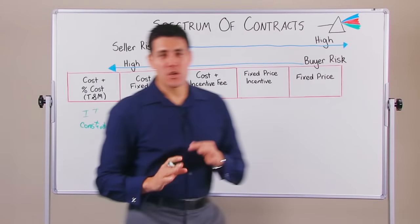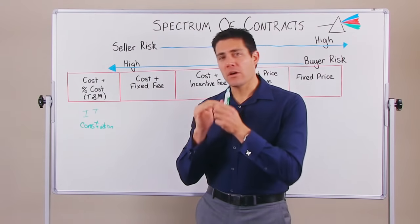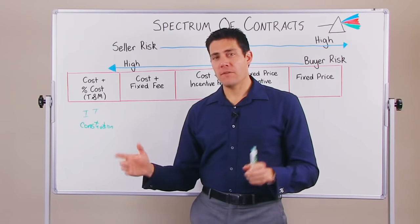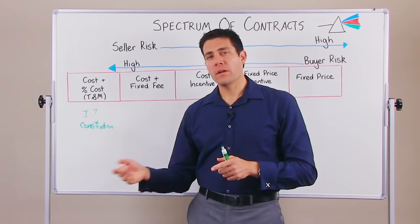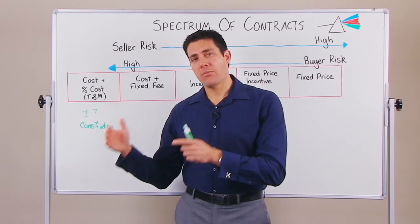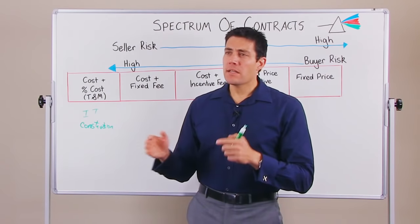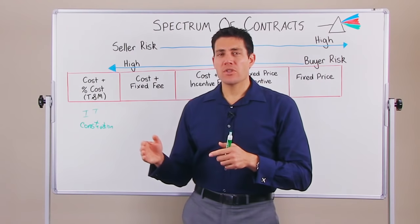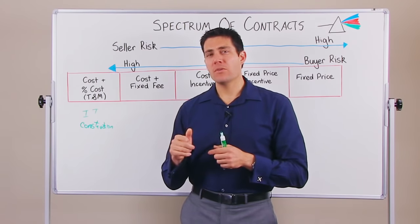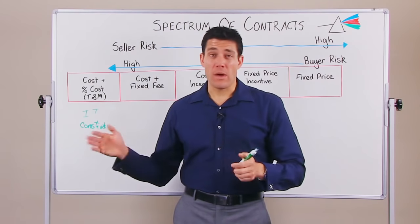The next one is a cost plus a fixed fee. This one is a little bit better on the buyer's side, in that you agree a cost structure with your supplier and also agree a fixed fee for them to be rewarded once the contract is done. They're going to get the same fixed fee whether or not the project comes in under or over budget, so it doesn't necessarily incentivize them to run the project at a lower cost — but it does insulate you as a buyer from complete cost blowouts.